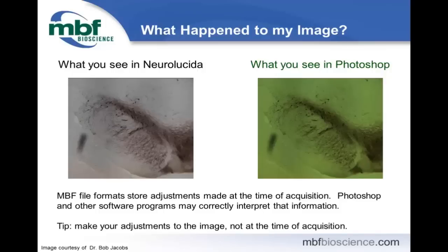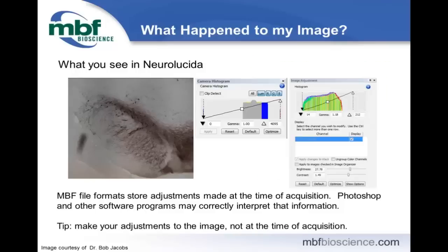MBF offers file formats that store your adjustments separately from the image itself, and Photoshop and other programs may not correctly interpret this. You might have a beautiful image in Neurolucida, but when you open the same file in Photoshop it may be a different color or have incorrect contrast. We recommend keeping your camera histogram with the full dynamic range and then making necessary adjustments in the image adjustment window after acquisition, rather than at the time of capture.